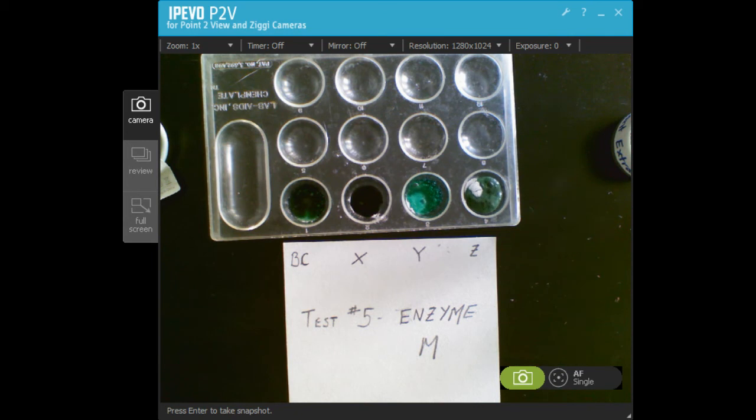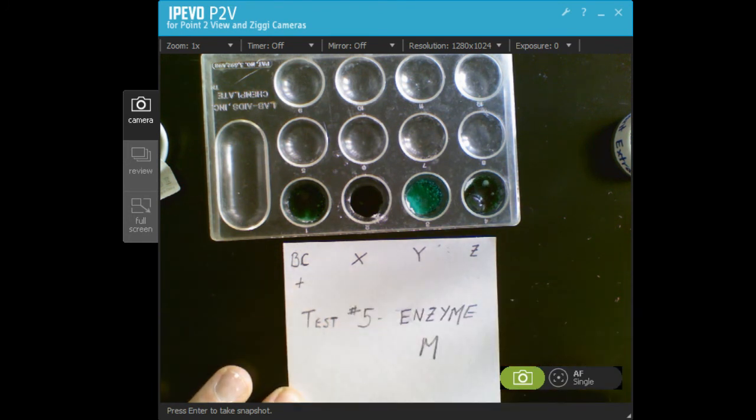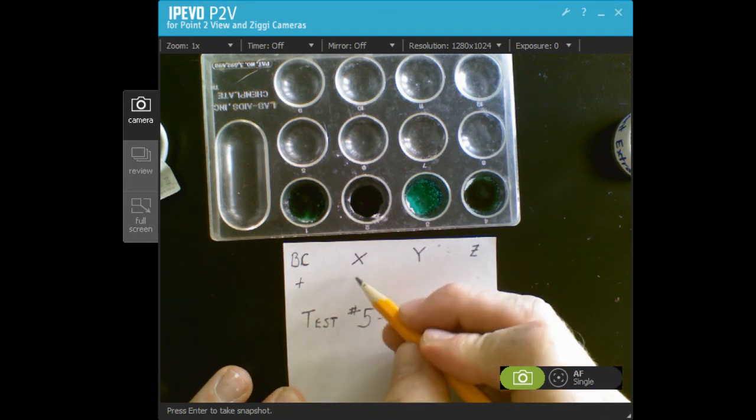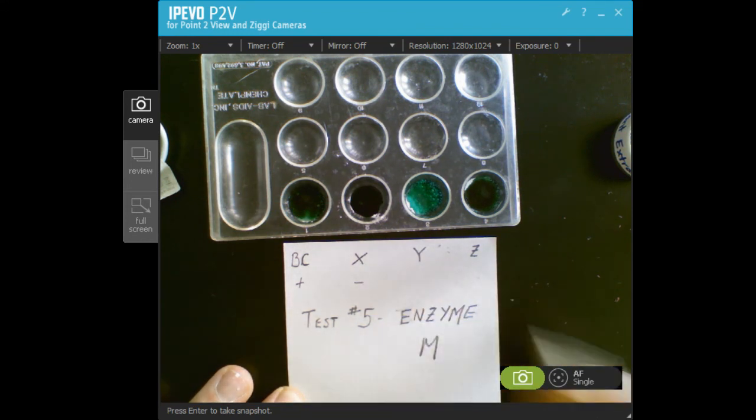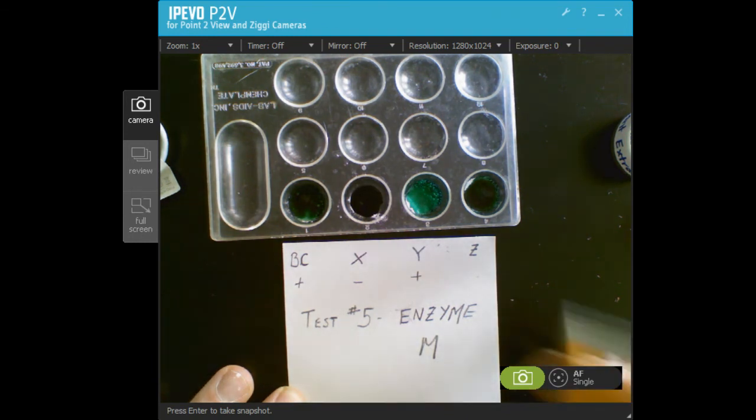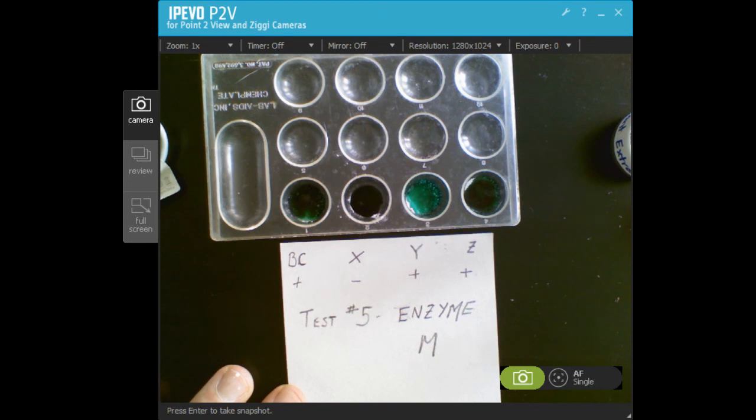And species Z also has enzyme M. So just to be clear: Botanicuris showed a positive result for enzyme M, species X was negative, species Y was a positive result, as well as species Z. That's it, that easy.